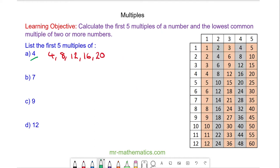Question B. The first five multiples of 7 are the first seven numbers in the 7 times table which are 7, 14, 21, 28 and 35.